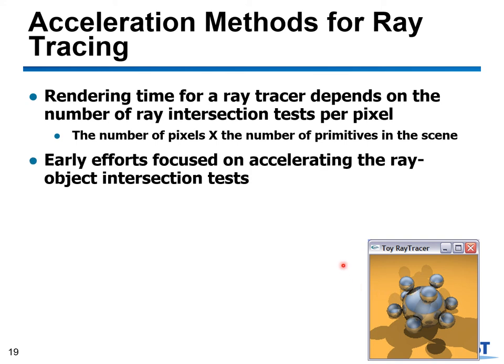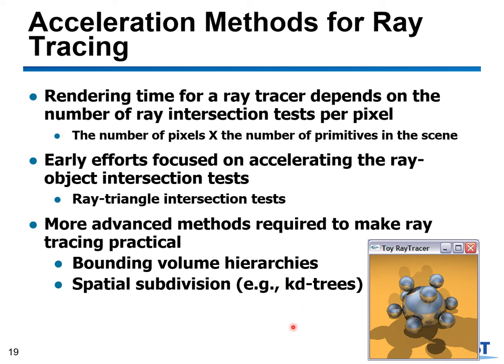Early efforts for improving ray tracing were focused on accelerating ray-object intersection tests. There are many techniques for accelerating ray-triangle intersection tests, which we won't cover in low-level detail here — if you want to know more, refer to my book. I'd like to talk about some advanced techniques to accelerate ray tracing. One of the well-known techniques is bounding volume hierarchies, or spatial subdivision techniques like KD-trees.